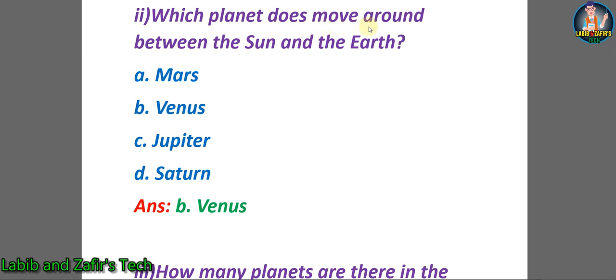Number two: Which planet does move around between the sun and the earth? A. Mars, B. Venus, C. Jupiter, D. Saturn. So students the correct answer will be B. Venus.